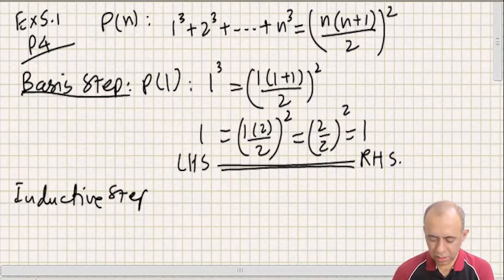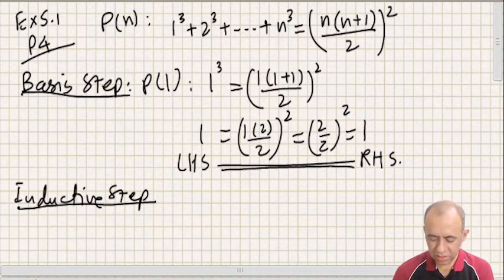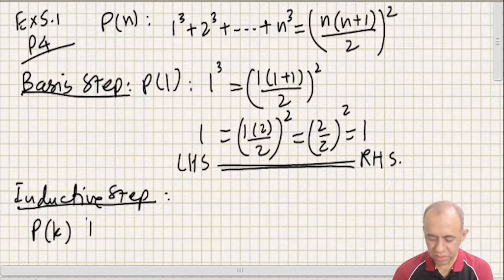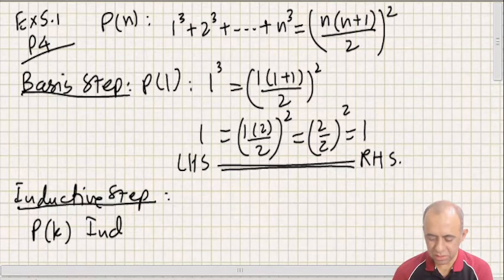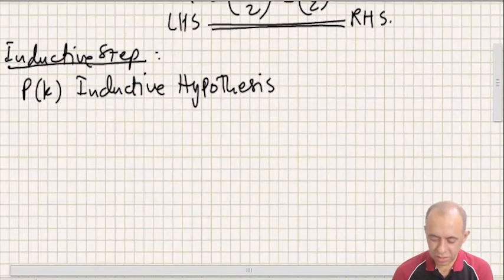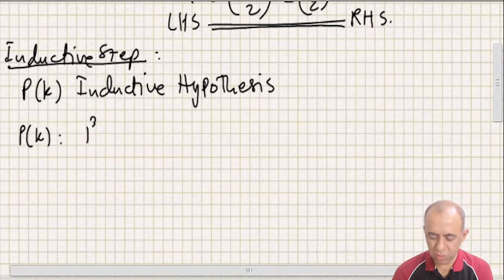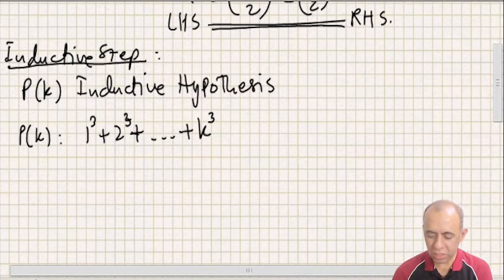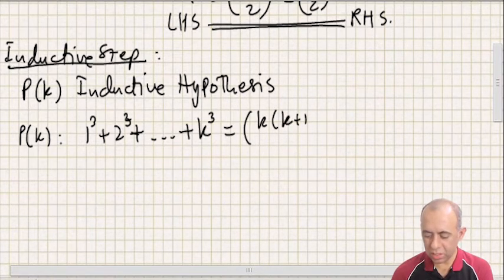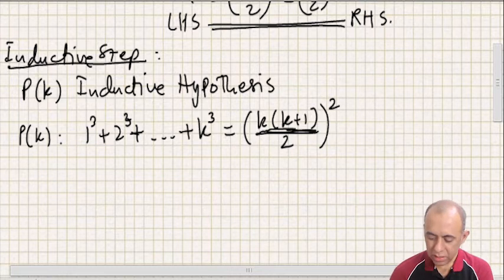Then we write down the inductive step. For this we write down P(k), also called the inductive hypothesis. P(k) is: 1³ + 2³ + ... + k³ = [k(k+1)/2]².